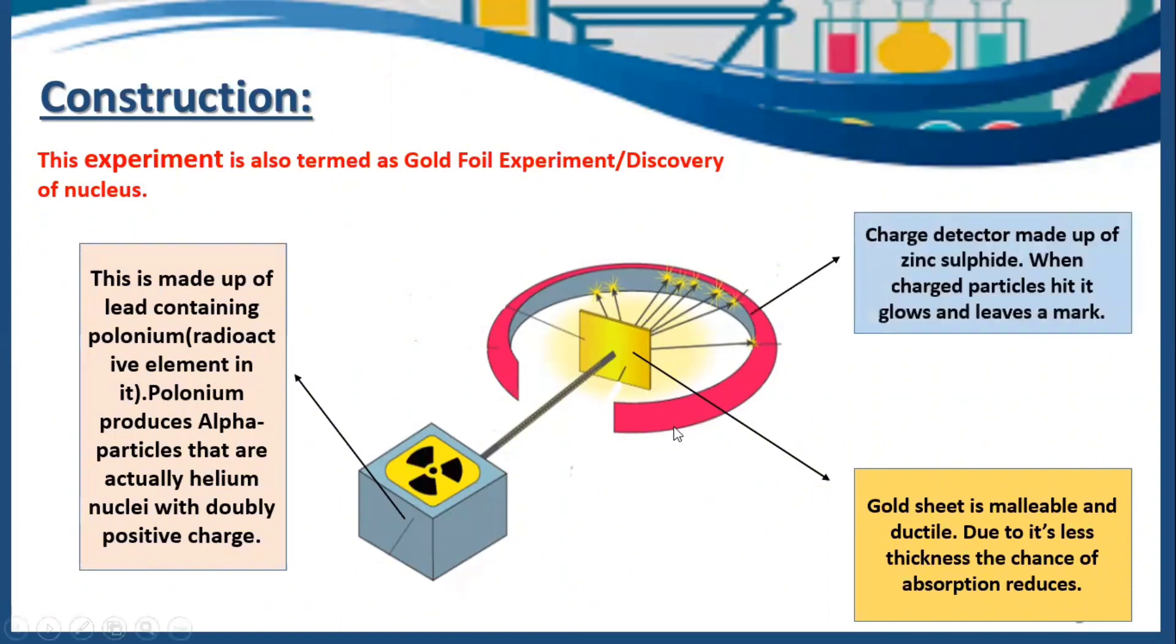The charge detector is made up of zinc sulfide. As the name indicates, it's something that is going to detect the charges. Zinc sulfide has a very unique property. Whenever any charge falls on zinc sulfide, it will glow and leave a mark there.